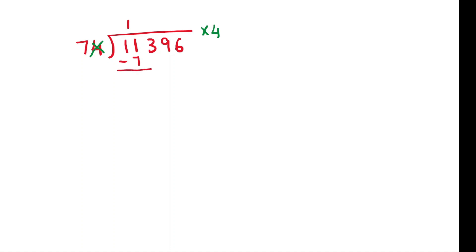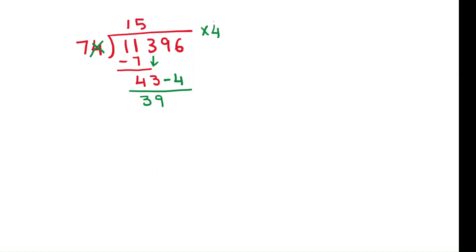11 minus 7 is 4. Now bring down the next number, which is 3 — giving us 43. Now work with 4 and the last digit of the quotient. 43 minus 4 is 39. Now work with 7: 7 times 5 is 35. 39 minus 35 is 4.